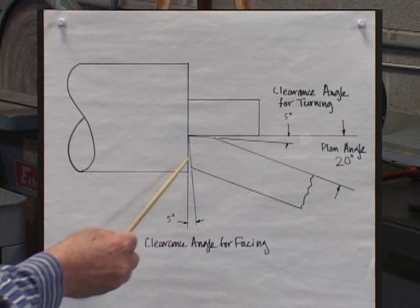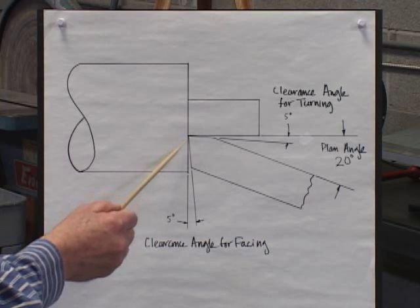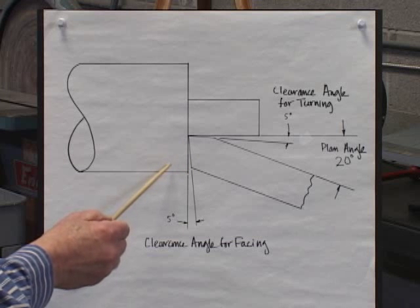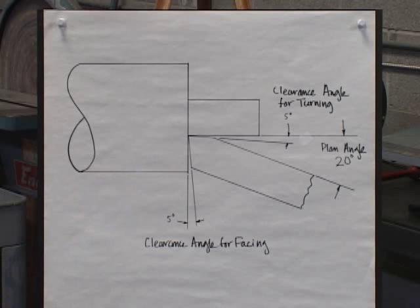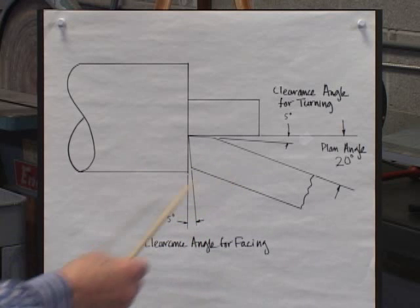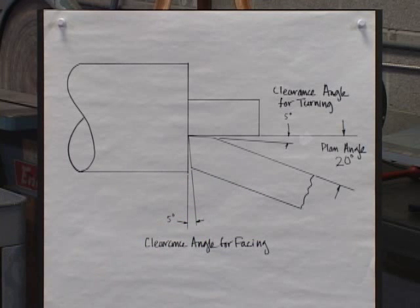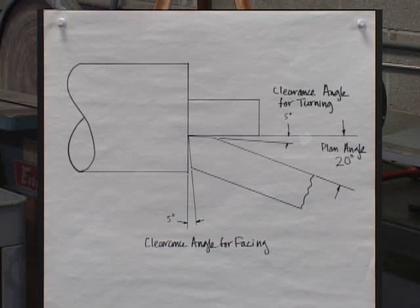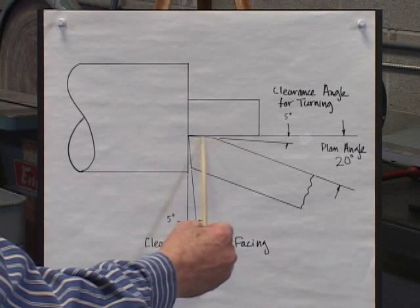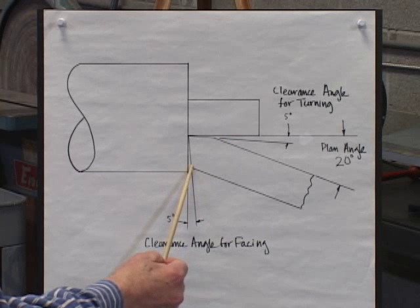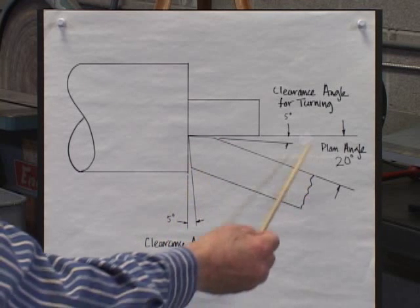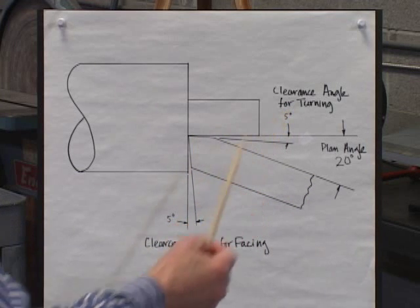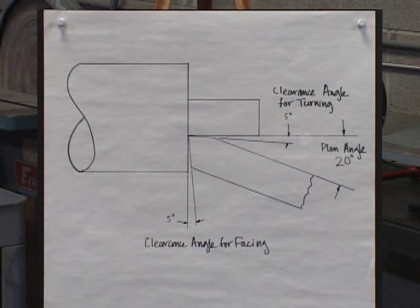If the lead angle is on this side of the perpendicular, then it's a positive lead angle. This tool holder geometry is the basic negative lead angle tool bit geometry and the most versatile geometry for the Wimberley tool holder. Notice that the tool has clearance for both turning and cutting — clearance here for facing and clearance here for turning.